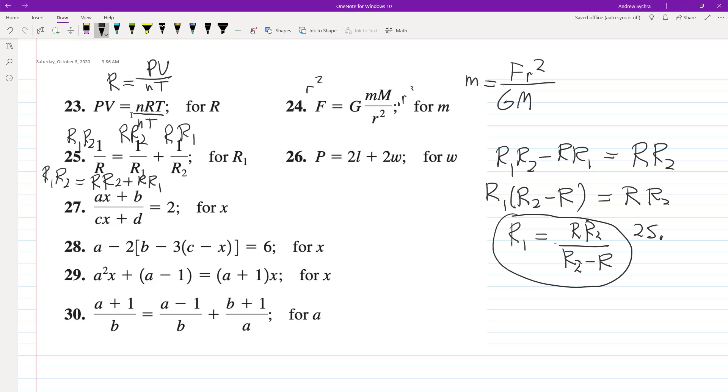For this one, all we need to do here is solve for W. So we have 2W is equal to P minus 2L, divide through by 2. So you essentially have W is equal to quantity P minus 2L divided by 2.